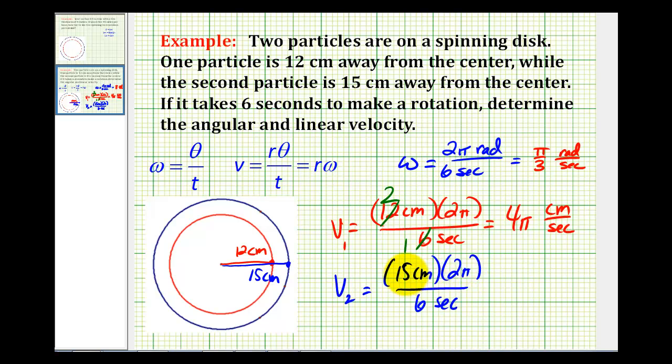In the numerator, we have 15 times 2. That's 30. 3 divided by 6 would be 5. So this would be 5 pi centimeters per second. Again, notice how the particle that's further out on the disk is going to travel further in the same amount of time.